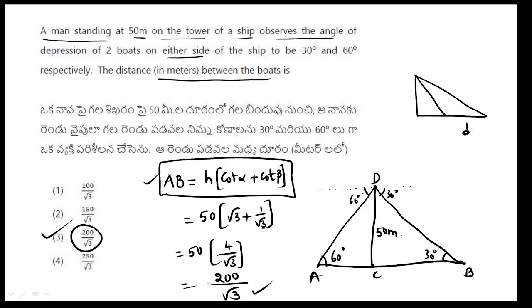Distance between the two points d is equal to, here A, here B, and here tower point. D is equal to h into cot alpha minus cot beta. On the same side of the tower, cot alpha minus cot beta. On either side, cot alpha plus cot beta, just three lines.